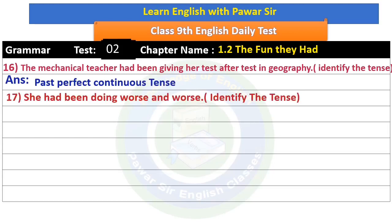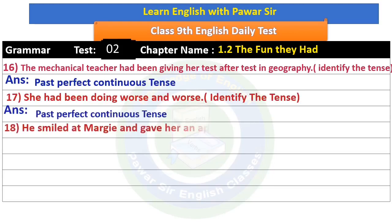'She had been doing worse and worse.' Identify the tense. The verb phrase 'had been doing' — it is past perfect continuous tense.